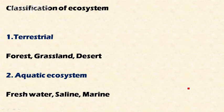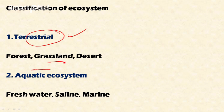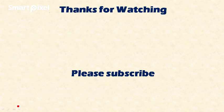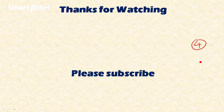The ecosystem can be classified into two different types. One is the terrestrial ecosystem — the land ecosystem — which includes forest, grassland, and desert ecosystems. The second is the aquatic ecosystem, which includes freshwater ecosystems and saline or marine ecosystems.